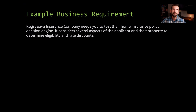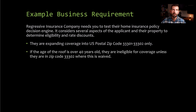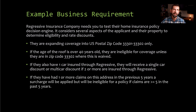So let's take an example business requirement. Let's pretend that Regressive Insurance Company needs you to test their home insurance policy decision engine. It considers several aspects of the applicant and their property to determine eligibility, rates, and discounts. They're expanding coverage into US Postal Zip Codes 33301 and 33302 only. If the age of the roof is over 40 years old, they're ineligible for coverage unless they are in Zip Code 33302, where this is waived. If they have one car insured through Regressive, they will receive a single discount, or a multi-car discount if two or more are insured. If they have had one or more claims on this address in the previous five years, a surcharge will be applied, but they will be ineligible for a policy if claims are greater than or equal to five in the past five years.